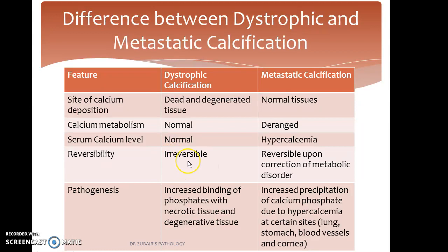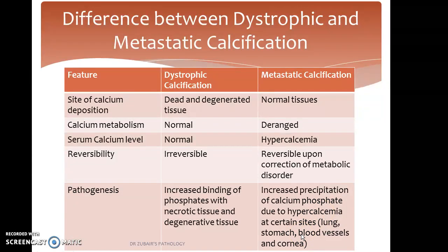As the tissue is already dead and degenerated, dystrophic calcification is an irreversible process. Whereas metastatic calcification is reversible upon correction of the metabolic disorder. Regarding pathogenesis: in dystrophic calcification, there is increased binding of phosphate with necrotic and degenerative tissue. In metastatic calcification, there is increased precipitation of calcium phosphate due to hypercalcemia at certain sites such as lung, stomach, blood vessels, and cornea.